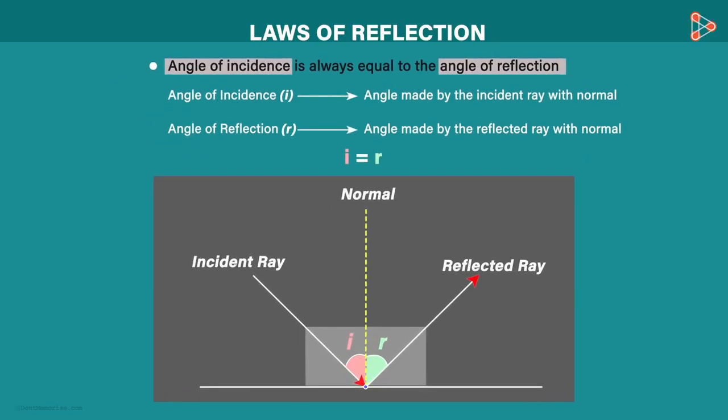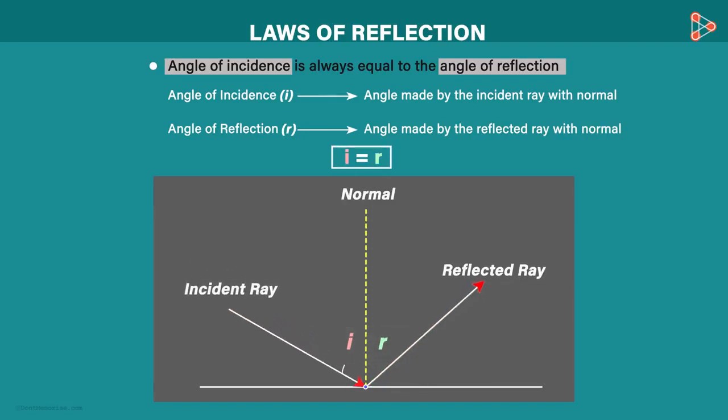Here as i is equal to r, if the incident ray strikes at this point, then the reflected ray will travel along this direction only so as to keep the measure of r same as i. If I move the incident ray here, then the reflected ray will also move to keep the measure of r same as i. i is always equal to r. Okay, so this was about the first statement.